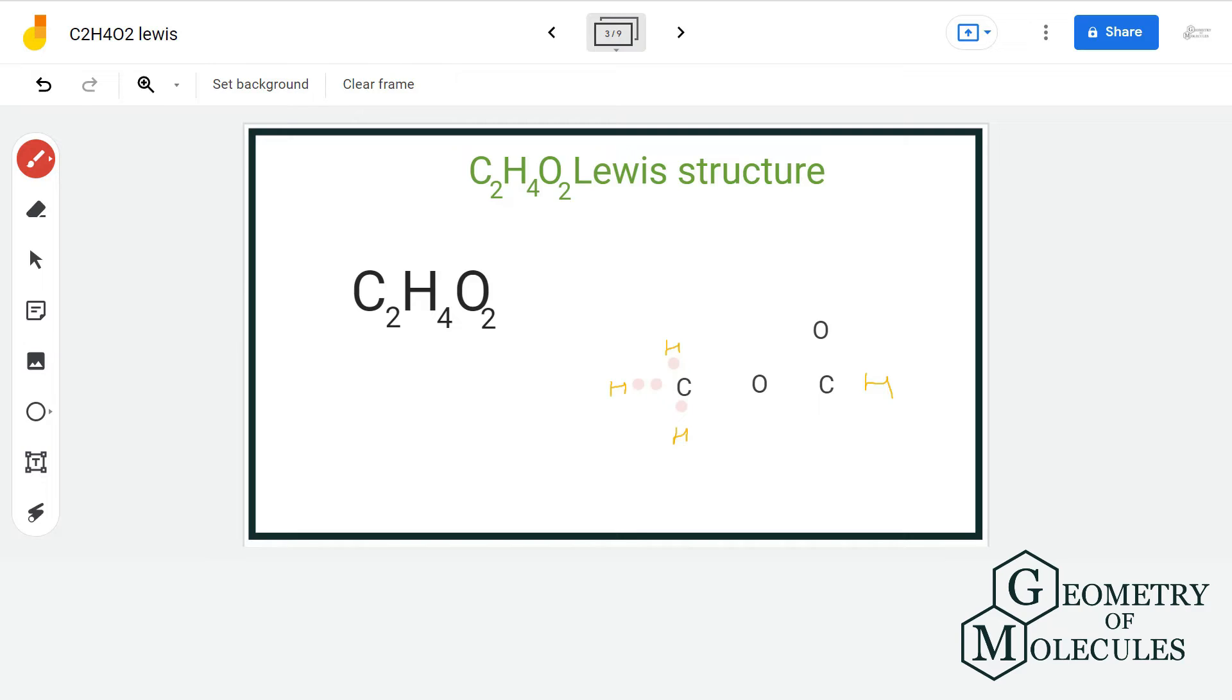This oxygen atom needs 6 more electrons for complete octet, this one needs 4, and this carbon atom needs 2 more. We will place electron pair in between carbon and oxygen that will result in the formation of double bond and assign the remaining electrons to this oxygen. This is the final Lewis structure of methyl formate and this is its structure.